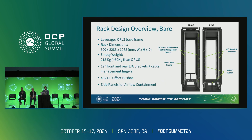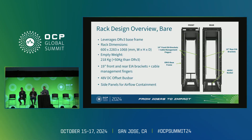Here's a look at the rack design overview at the bare metal. We leveraged the majority of the ORV3 base frame, with some modifications to the canopy. The rack dimensions are 600 mm wide by 2,283 mm tall and 1,068 mm deep. It weighs approximately 218 kg, which is approximately 50 kg heavier than the ORV3. We bolted on 21-inch to 19-inch adapter brackets to install network gear without needing additional shelves and trays. In the rear, we added a 48-volt offset bus bar. Side panel containment comes directly with the rack, whereas in traditional ORV3 those only come as an accessory installed at the end of rows.